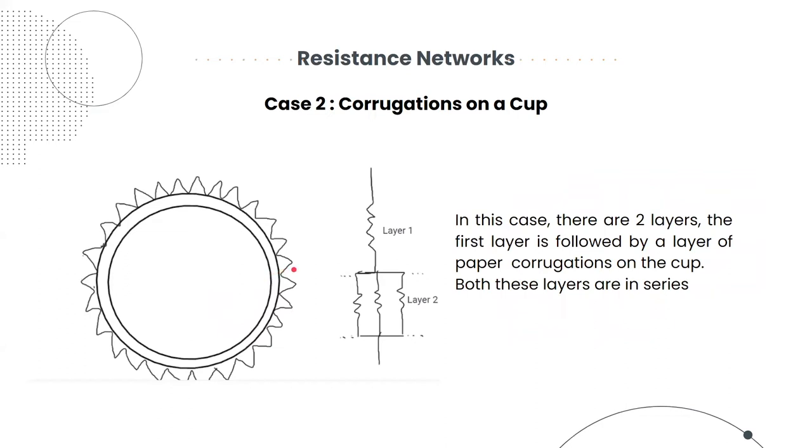Case 2. For this case, we have two layers. The inner layer being that of paper, while the outer layer is made up of paper corrugations. Resistance network suggests that, as in case 1, the two consecutive layers are in series with each other. To model this configuration, we approximated the air chambers in corrugation to be parallel to each other, and also approximated the chambers to be nearly equilateral triangles.